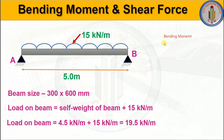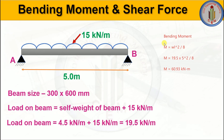Now let's find the bending moment. For a simply supported beam, the bending moment formula is wL²/8. So the bending moment equals 19.5 multiplied by 5 squared divided by 8, giving us 60.93 kilonewton meter as the bending moment for this simply supported beam.